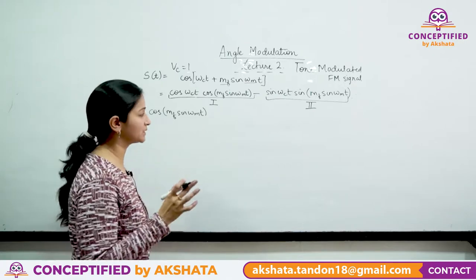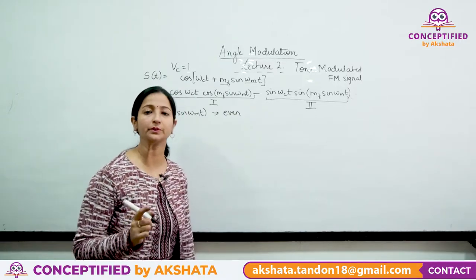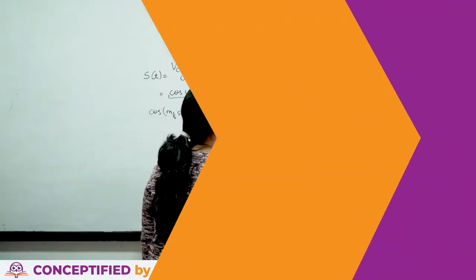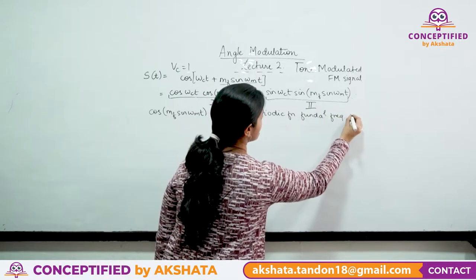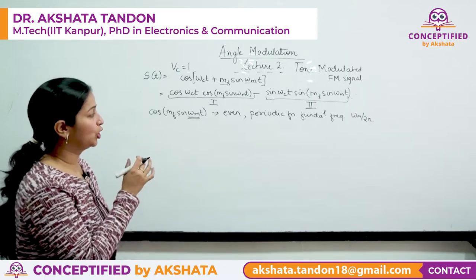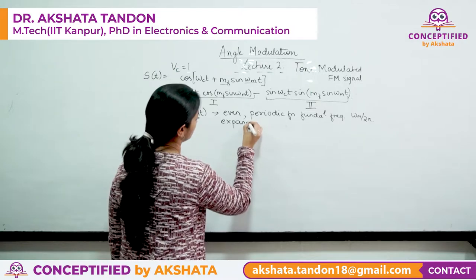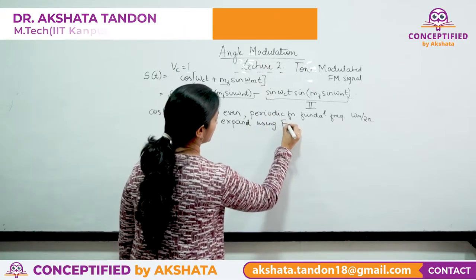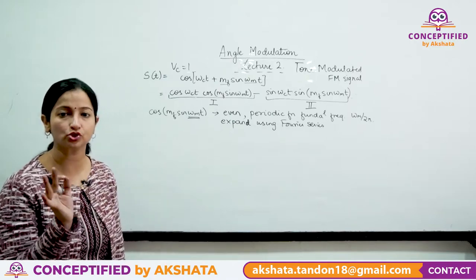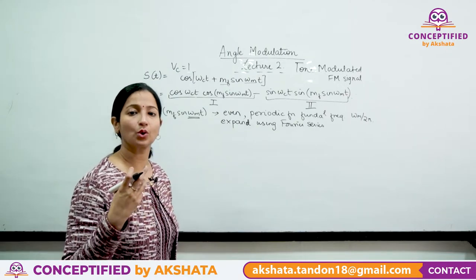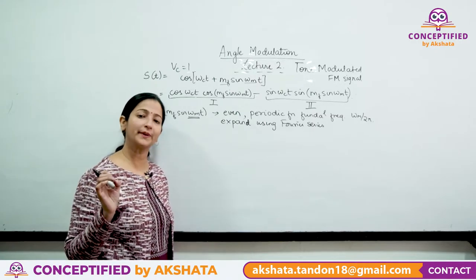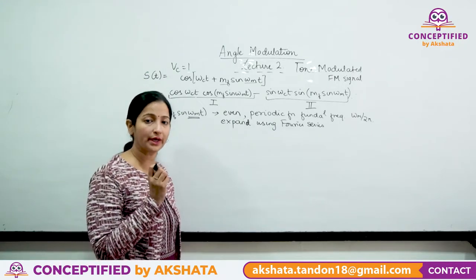Looking at the term cos(mf·sin(ωm·t)), we can make three observations: first, it is an even function because it is a cosine. Second, it is a periodic function whose fundamental frequency is ωm / 2π. Third, since it is periodic, we can expand it using a Fourier series. Since it is even, all odd harmonics will be zero.